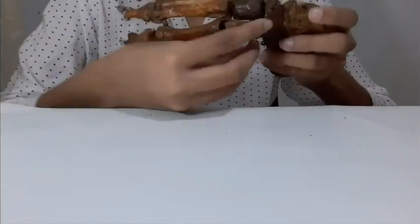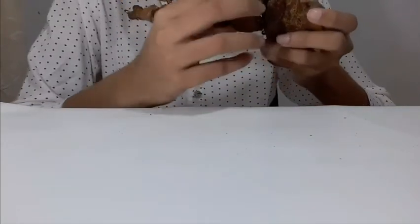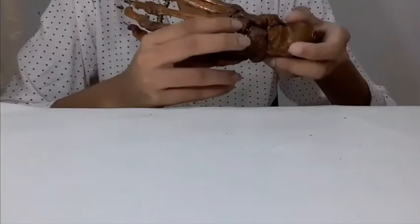Can you identify the bones? This is calcaneum, this is talus, this is navicular, this is medial cuneiform bone, and this is intermediate cuneiform bone, and this is lateral cuneiform bone. This is cuboid, these are five metatarsals, and these bones are tarsal bones, and these are phalanges.